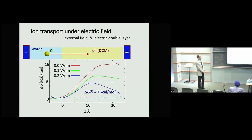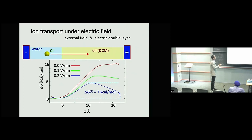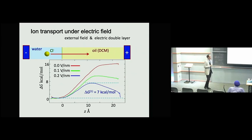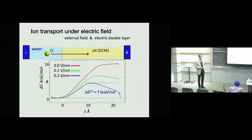So far we considered free energy surfaces without an external field, but realistic ion transfer occurs with an external electric field. We assumed typical values of 0.1 or 0.2 V/nm used in electrochemical measurements. With the external field, the ion is asymptotically stabilized in the positive region, so a barrier appears. In the case of 0.2 V/nm, the barrier is estimated to be 7 kcal/mol in the 1D surface.